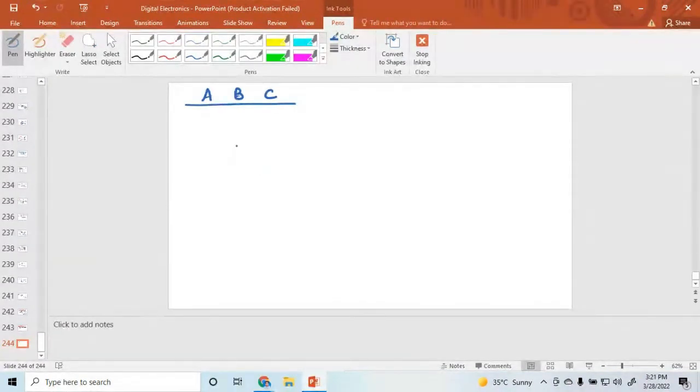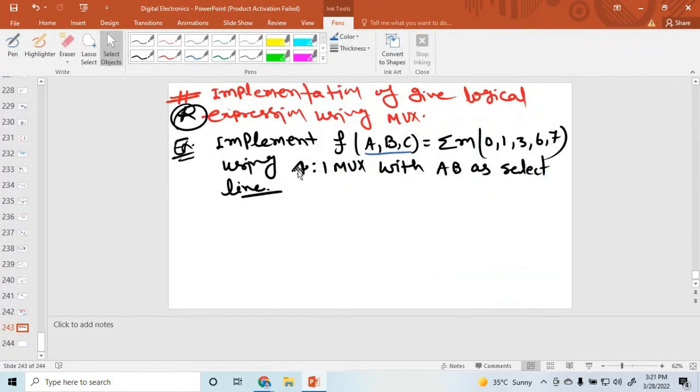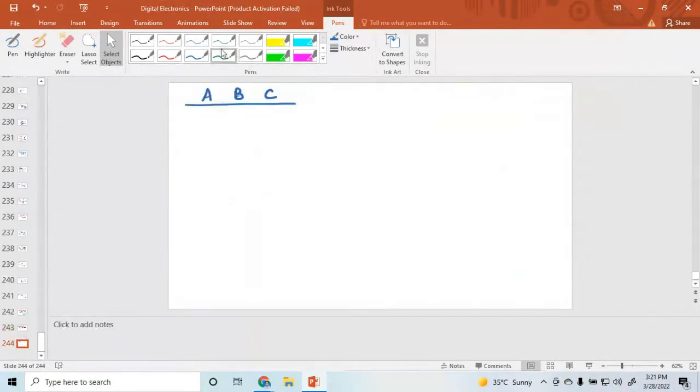Here given that a and b is a select line. See that in this question. Here mentioned that a and b as select line. So c is free. A and b is select line. So I am drawing here. We can write down these values. First, write down like this: value is 0, 3-bit number, 1, then 2.